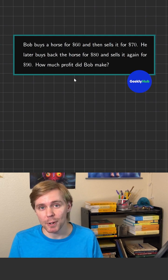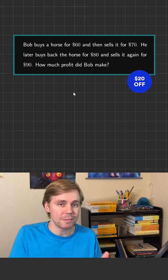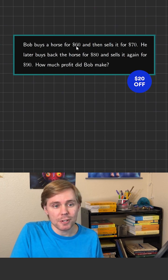Pause the video here to think about it before I give away the answer. Okay, so I think the easiest way to think about this problem is in terms of debt and credit. So when Bob first goes and buys this horse,